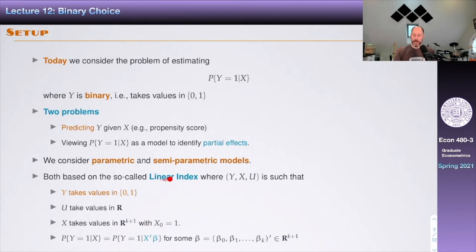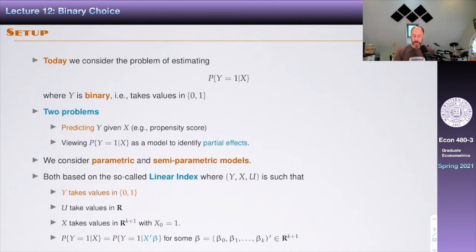Both are going to be based on the so-called linear index, where Y, X, and U are random variables. Y takes values in zero and one, U is a scalar, and X is a set of covariates of dimension K plus one, where the first is a constant term. A linear index model is one where the probability of Y given X equals the probability of Y given X prime beta — conditioning on X is the same as conditioning on the linear combination X prime beta, which is called the linear index. This reduces the dimension of the problem, sometimes called dimension reduction.